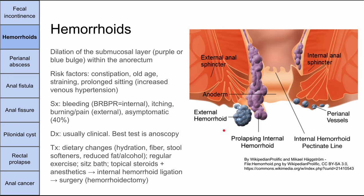Symptoms of hemorrhoids: you might have bleeding — bright red blood per rectum usually signifies an internal hemorrhoid. Itching, burning, and pain usually signify an external hemorrhoid. About 40% are actually asymptomatic. So if you see bleeding, think internal; if you see pain and burning, think external, but many can be asymptomatic. Diagnosis is usually made clinically with history and exam, and the best test is anoscopy.